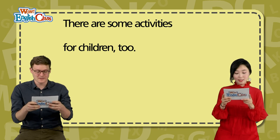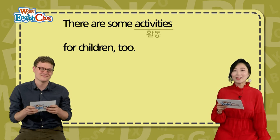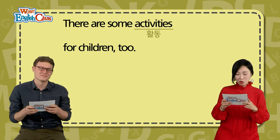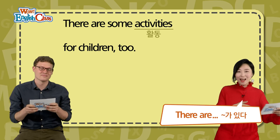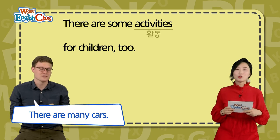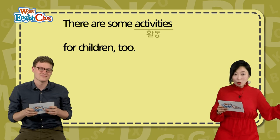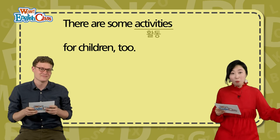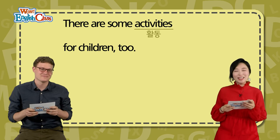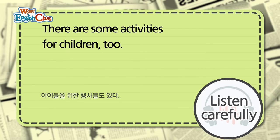Next: There are some activities for children, too. 좀 어떤 활동들도 있어요 — 아이들을 위한 활동들도 있대요. There are — 뭐 뭐가 있다라는 표현이에요. There are some activities — 활동들이 있다. There are many cars — 차들이 많이 있다. There are blah blah하면 뭐 뭐가 있다, 많다라는 의미가 되겠어요.